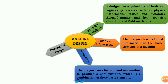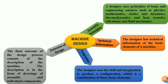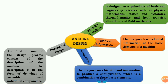The fourth component is the outcome of the design. The final outcome of the design process consists of the description of a machine or mechanical system. The description is in the form of drawings of assembly and individual components.